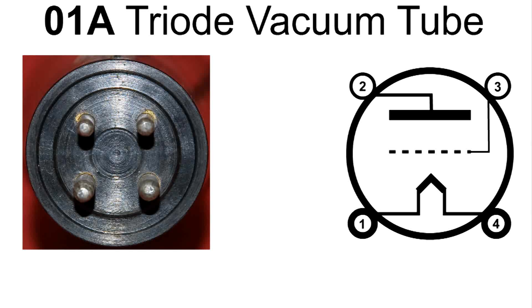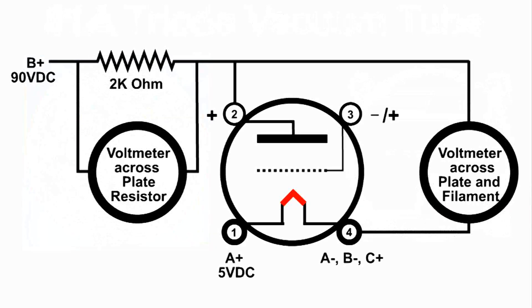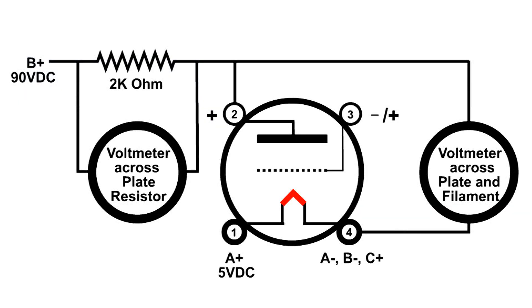And this is the setup that I'm going to demonstrate how this vacuum tube works. I'm going to have 90 volts on the plate through a 2K ohm resistor. And across that resistor, I'm going to have a voltmeter, so you can see what's happening there. And then I'm also going to have another voltmeter, the one all the way to the right, that is across the negative and positive of that vacuum tube.